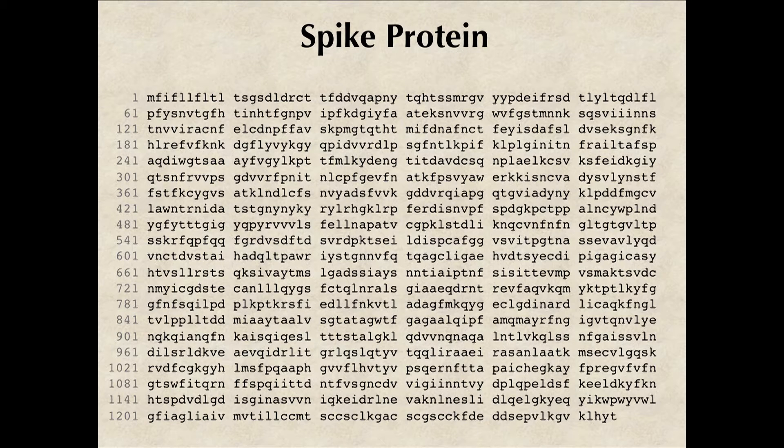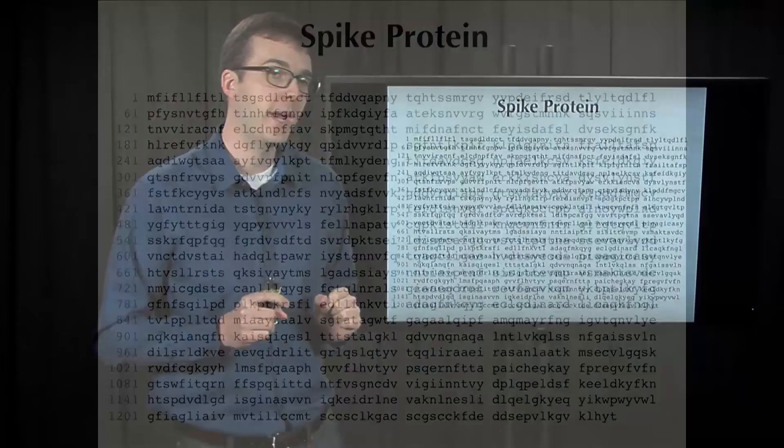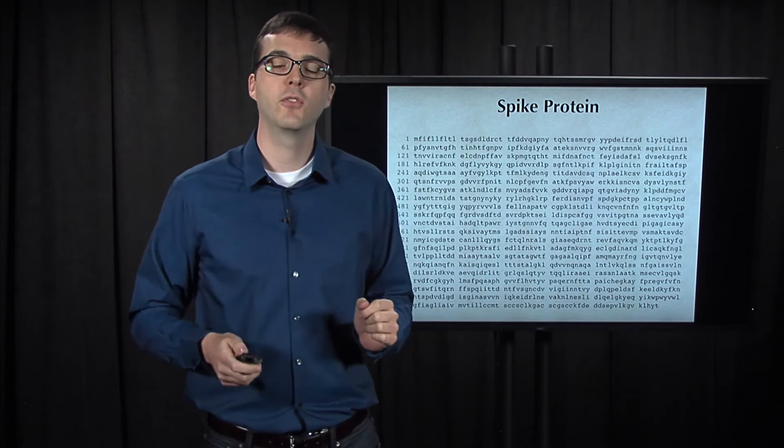In order to construct a multiple alignment of coronaviruses, researchers chose the spike protein, which identifies and binds to receptor sites on the host's cell membrane. Here is the spike protein for the SARS coronavirus.